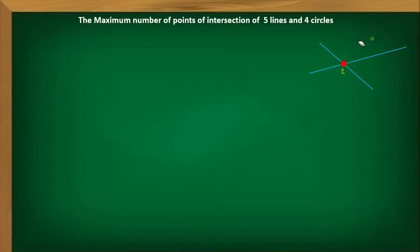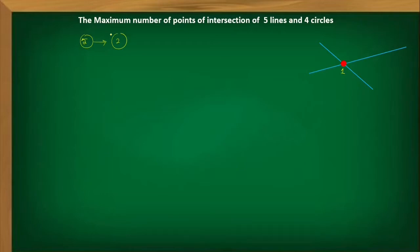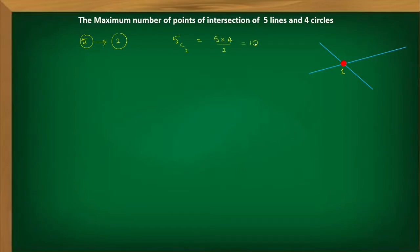How many pairs of lines can be formed from the five lines? From five lines, how many ways can you select two lines? That is 5C2, which equals 5×4÷2 = 10. So we have 10 pairs of lines that can be formed from the five lines.